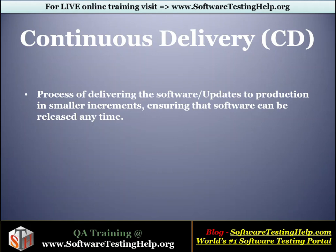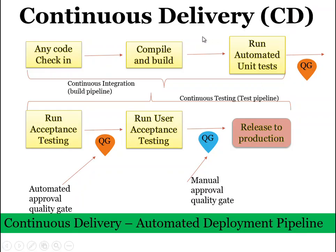Continuous delivery is a process of delivering software updates to customers more frequently and to production in small increments, ensuring that the software can be released anytime. This is the diagrammatic representation of continuous delivery. Since faster deliveries focusing on cost, time, quality, and reliability is the objective, automation throughout is a must. CD embraces total automation for its complete cycle, which starts with code check-in, compiling and building, running automated unit tests, running acceptance testing, until the code is ready for production. This complete pipeline is called the automated deployment pipeline.